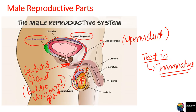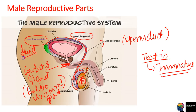The sperm produced in the testis, matured in the epididymis, moves through the vas deferens (sperm duct). When it arrives here, it is very sluggish - meaning it is lazy and doesn't have much energy. So the seminal vesicle produces a fluid that provides nourishment to the sperm - just like eating food provides nourishment - making it go from lazy to active.